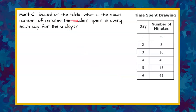Part C. Based on the table what is the mean number of minutes the student spent drawing each day for the six days. Please pause now and come back when you're done. Welcome back. So we're finding the mean in Part C. Mean is the average of the data set. To find the average we are going to add all the values in our data set. So when we add 20 plus 8, 28, add 16, add 40, add 15, add 45, and we get 144.